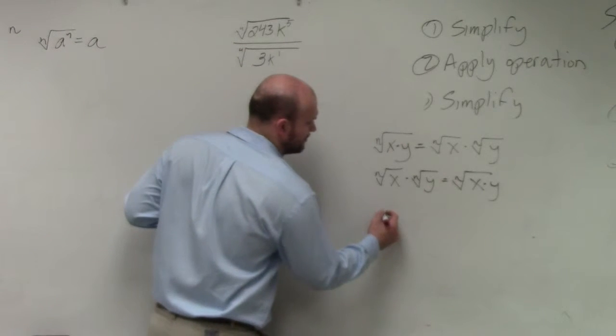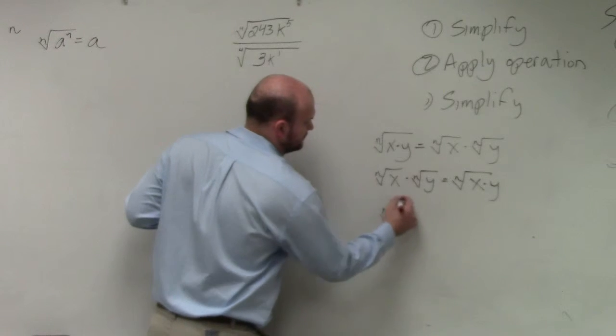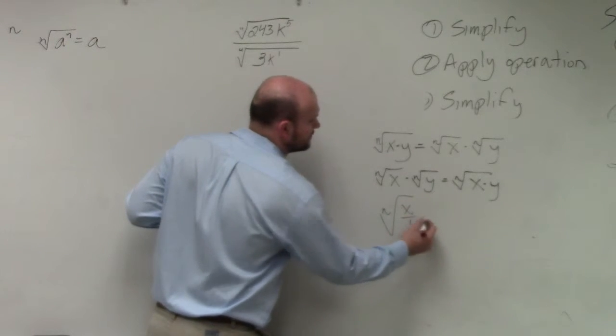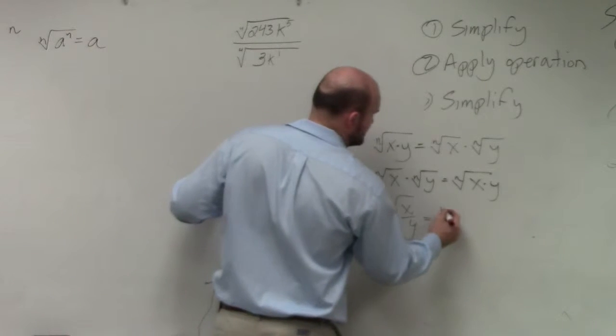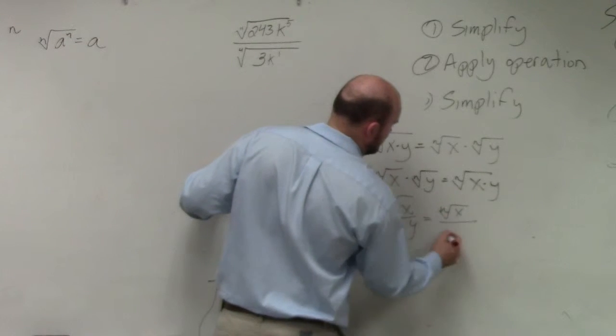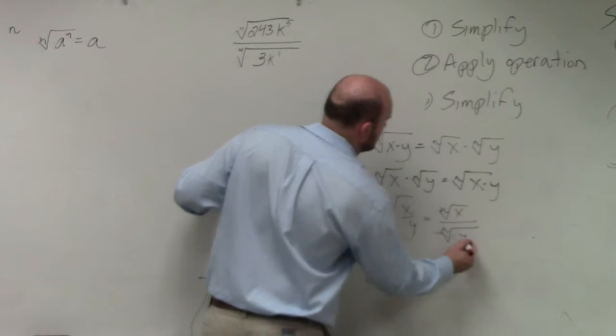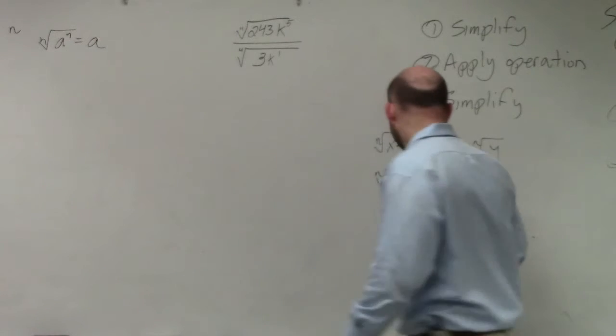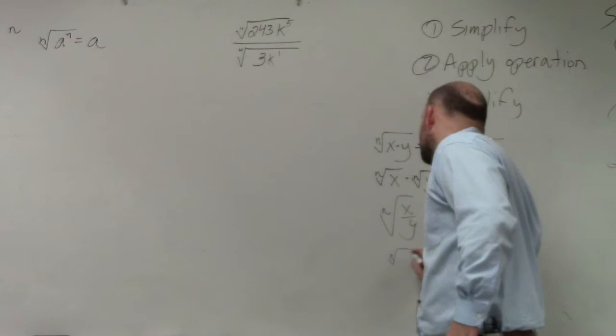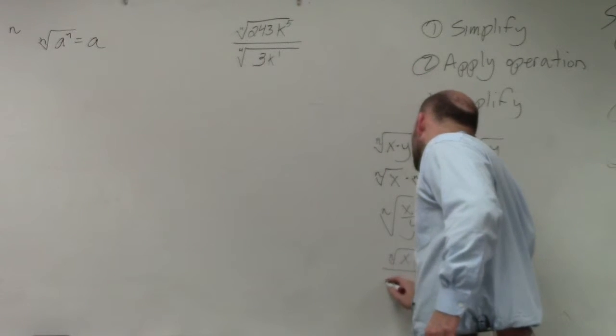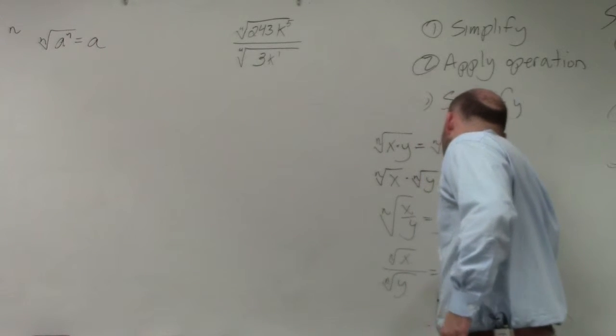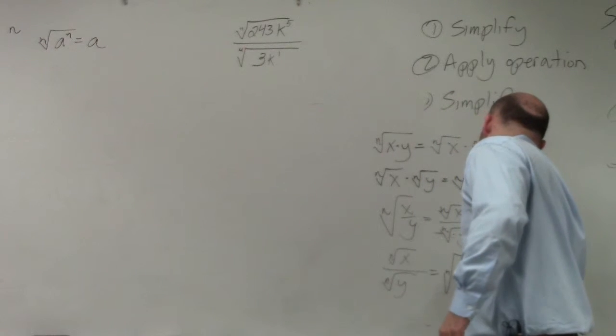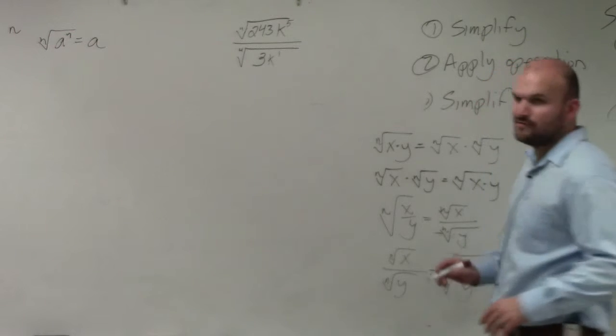The other thing we talked about was, if I have n to the x over y, I can break that up into the nth root of x over the nth root of y, correct? And the same thing works, guys, in the other way. If I have the nth root of x over the nth root of y, I can rewrite that as the nth root of x over y.